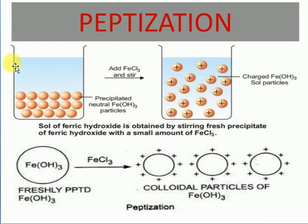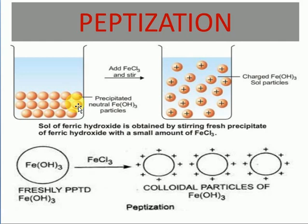The peptidization method converts a suspension into a colloidal solution by adding a small amount of electrolyte. The difference between suspension and colloidal particles is that suspension particles have no charge — they are neutral — while colloidal particles carry a positive or negative charge. When I add a small amount of electrolyte like FeCl₃, it produces positive charge, which is absorbed by the colloidal particles. They start repulsion and never settle at the bottom — they keep moving. This is the peptidization method.